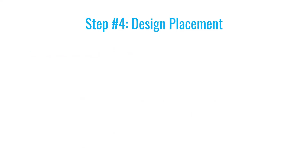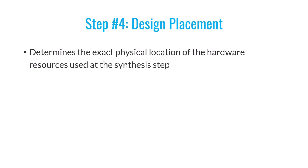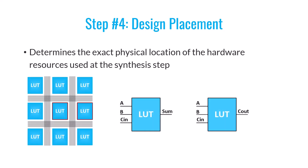Let's move on to stage four, known as placement. During this stage, we precisely determine where within the FPGA the resources used during synthesis will be located to implement our design. For example, we used two lookup tables to create the full adder. Suppose the FPGA has around 4,000 lookup tables available. During placement, we decide which specific lookup tables will be used — shown here highlighted in red — to implement our adder.